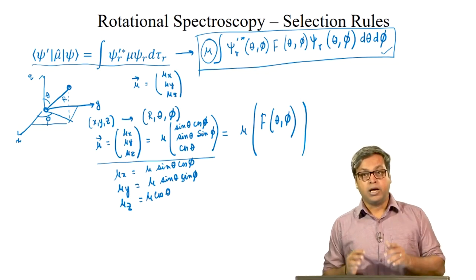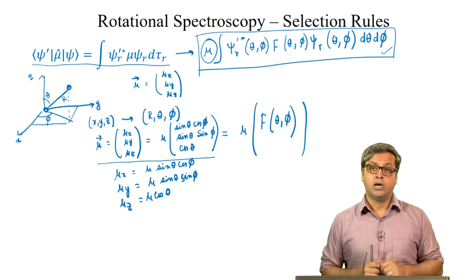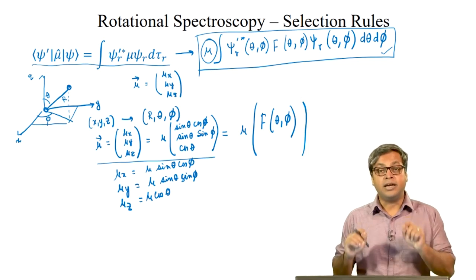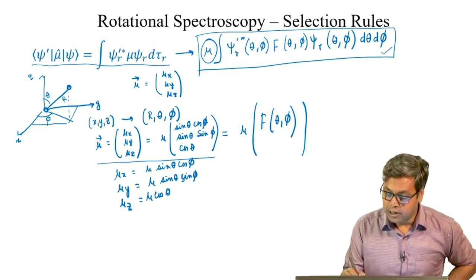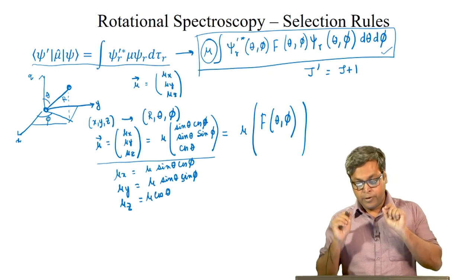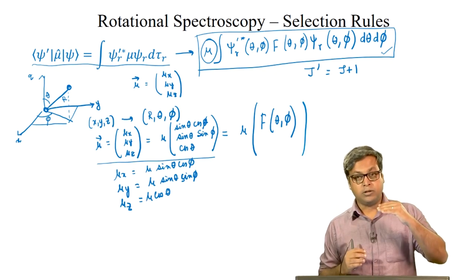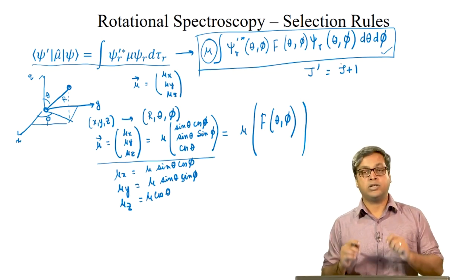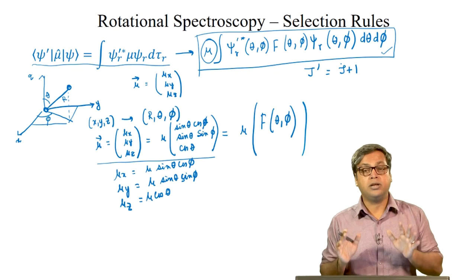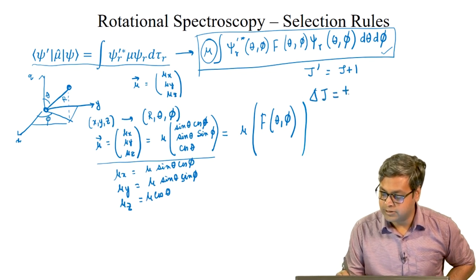The dipole moment is oriented along the internuclear axis of the diatomic molecule. It can be shown that in the absence of an external electric or magnetic field, the integral is only nonzero if J prime equals J plus 1, where J prime is the rotational quantum number of the final state and J is the rotational quantum number of the initial state. Thus, the selection rule for changes in rotational quantum numbers for a diatomic molecule is delta J equals plus or minus 1.